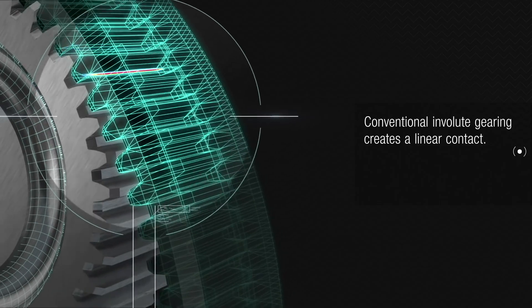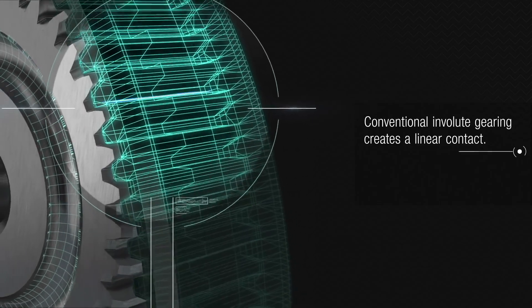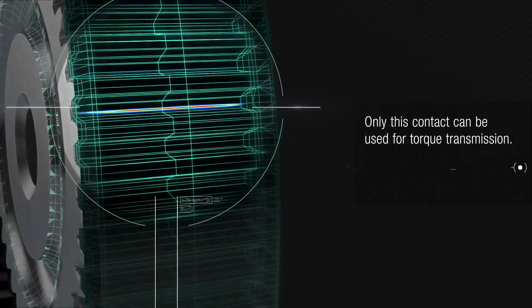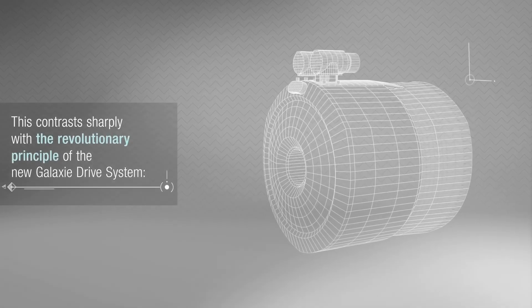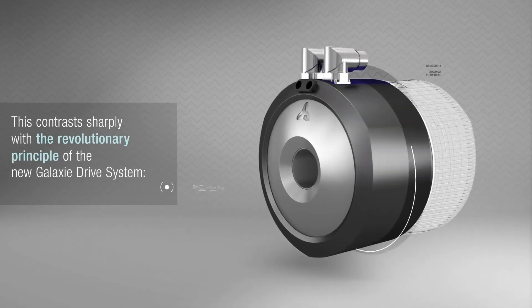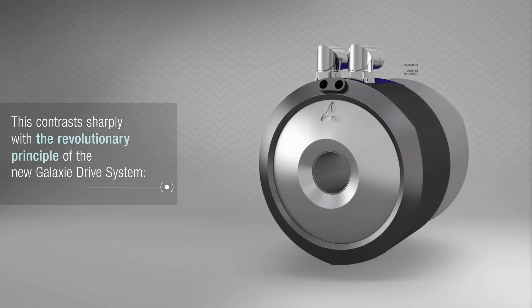Conventional involute gearing creates a linear contact. Only this contact can be used for torque transmission. This contrasts sharply with the revolutionary principle of the new Galaxy drive system.